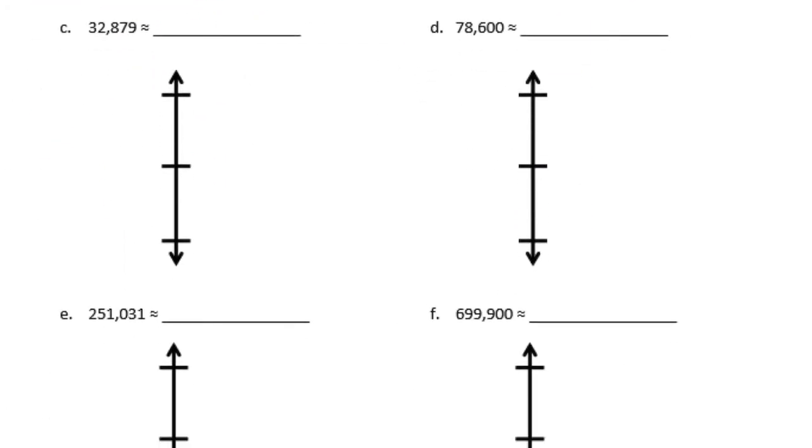C, we have 32,879. I'm going to put 32,000 here and 33,000 up here. In the middle is 32,500. Let's plot 32,879. So now all we really need to look at is this 879 piece. Where am I going to put that between here and 1,000? This is 500, so it's going to be more than 500. 879 is pretty close to 1,000, so it's going to go maybe right about there. So we are rounding up to 33,000.